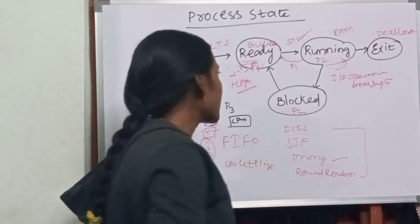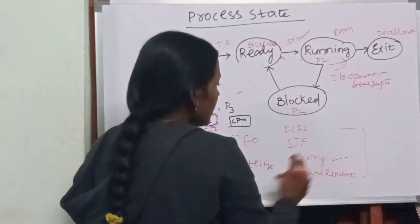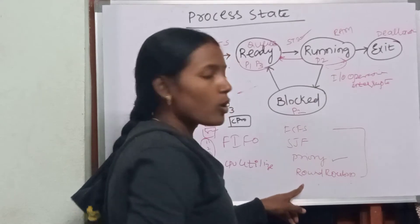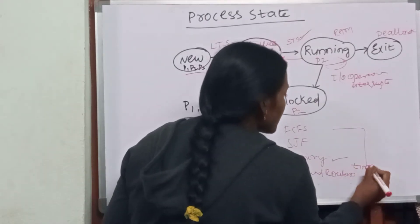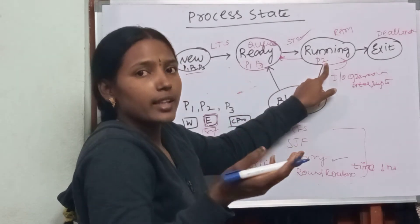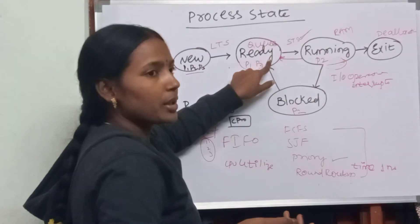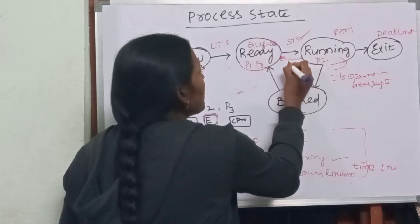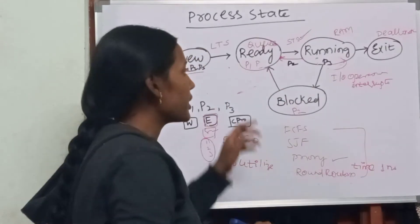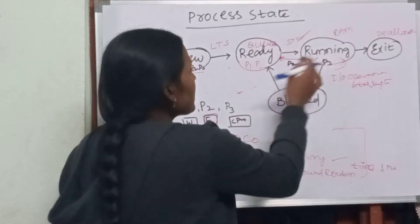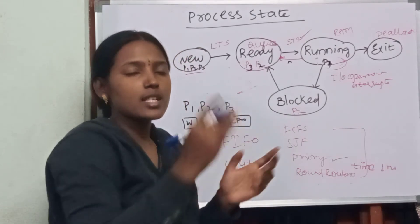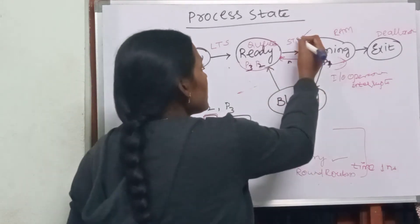For the round-robin scheduling algorithm, each process has a time quantum — for example, one nanosecond. When P2's time quantum of one nanosecond is completed, it is preempted and sent back to the ready queue. The next process in line then enters the running state. Every one nanosecond, only one process executes: first P1, then P2, then P3, and the rotation continues. This swap-in and swap-out process is managed by the short-term scheduler.